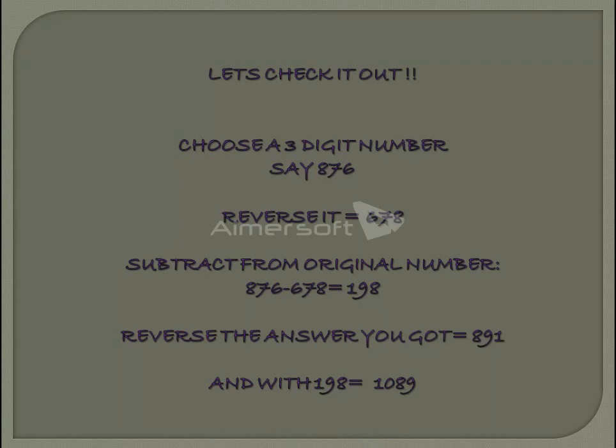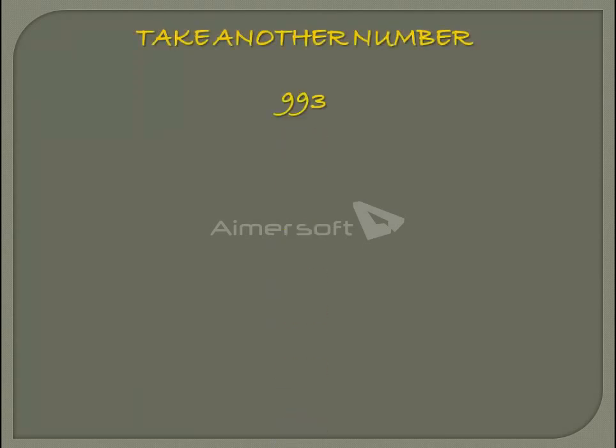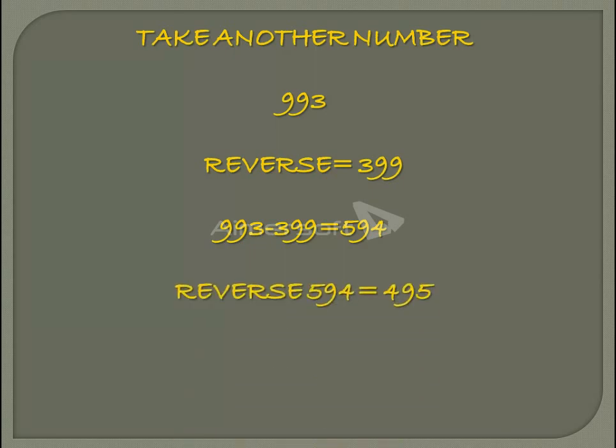Now take another number, say 993. Reverse it and you get 399. So 993 minus 399 gives 594. Reversing 594 gives 495. So 495 plus 594 equals 1089.